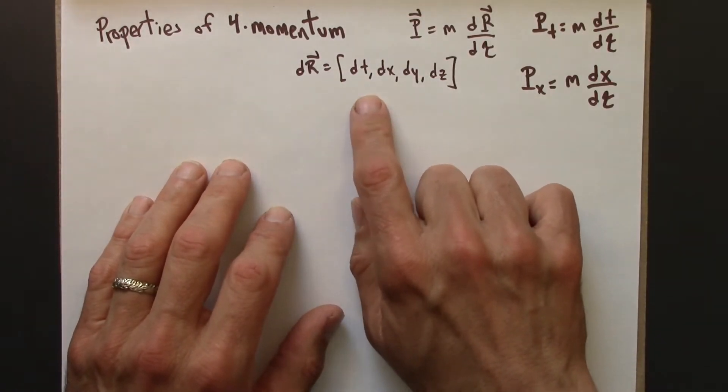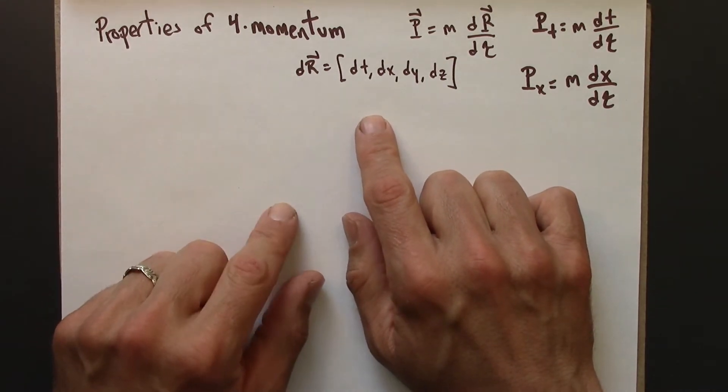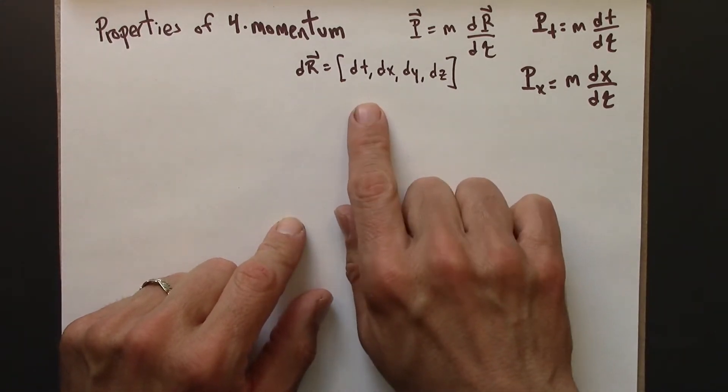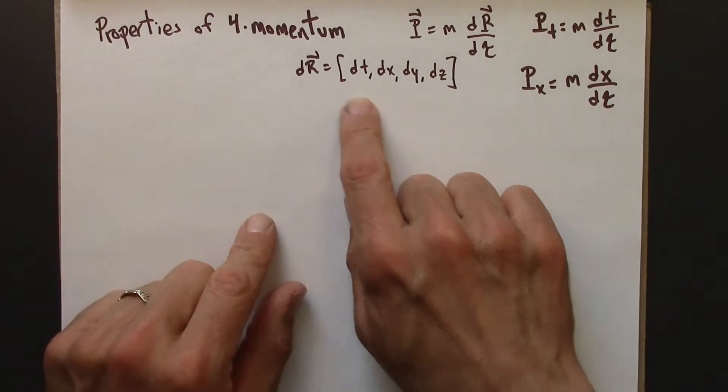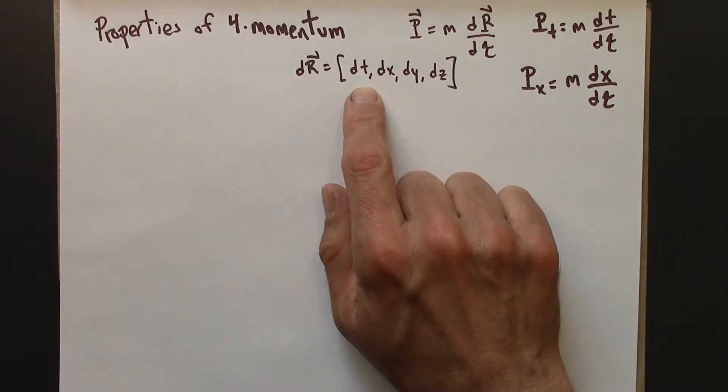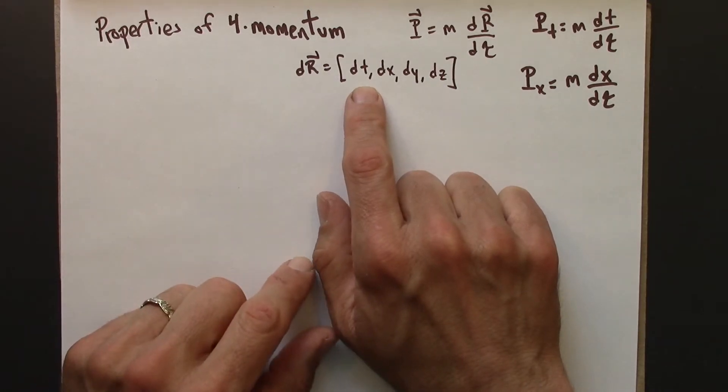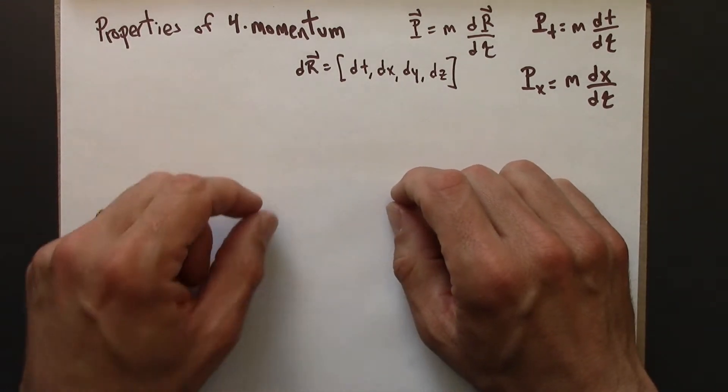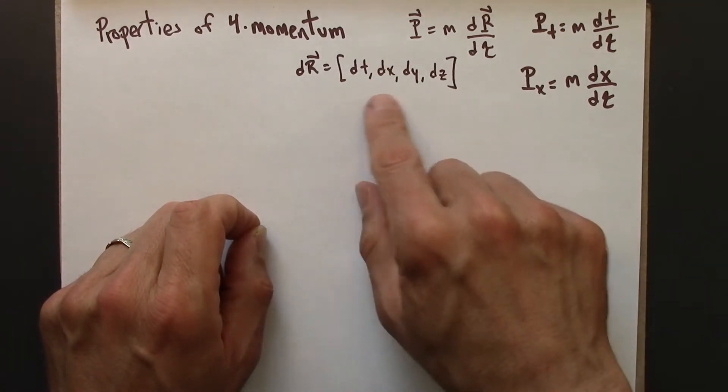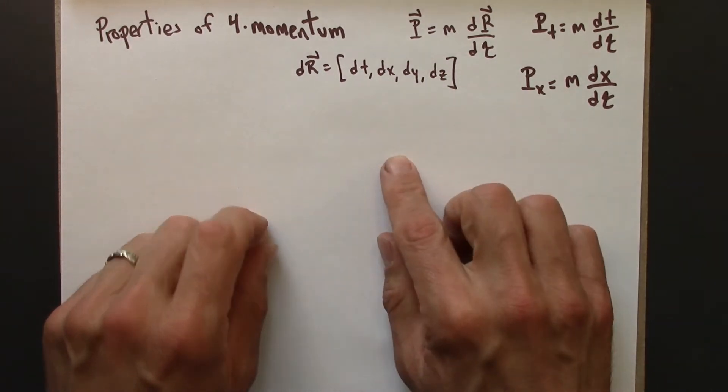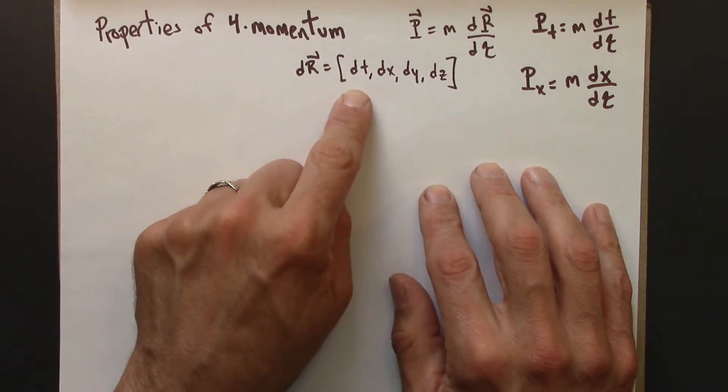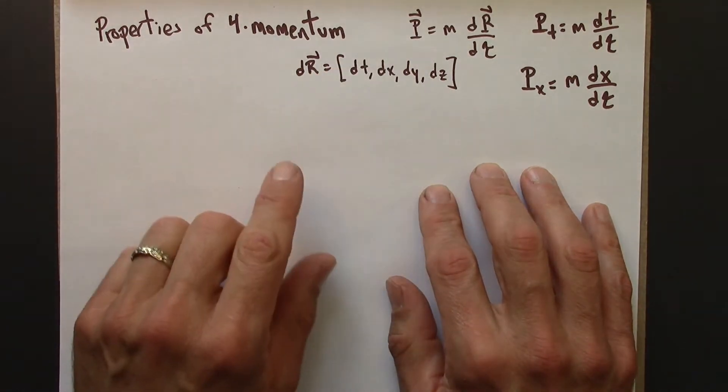We'll start by noting that the 4-momentum is frame-dependent. Different observers will measure different values for the momentum. The reason for that is that this displacement is frame-dependent. We've seen throughout the course that different observers will disagree on the coordinates for spacetime events, or the coordinate differences between spacetime events.